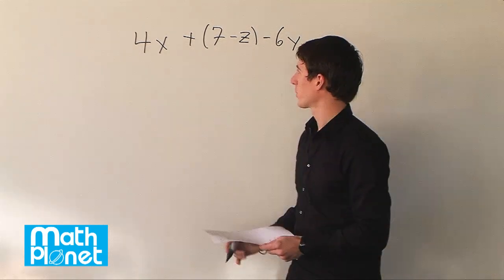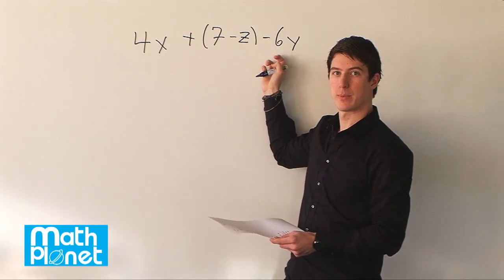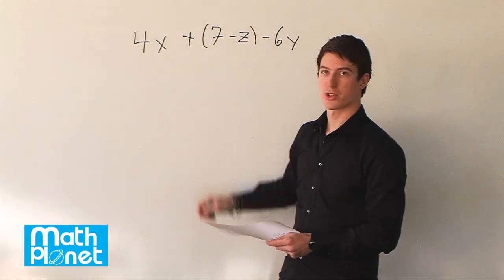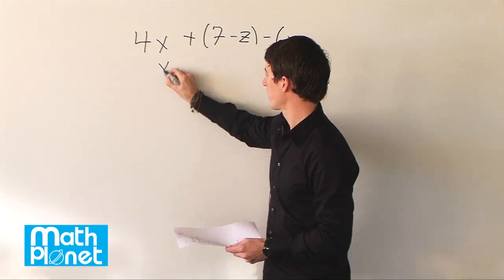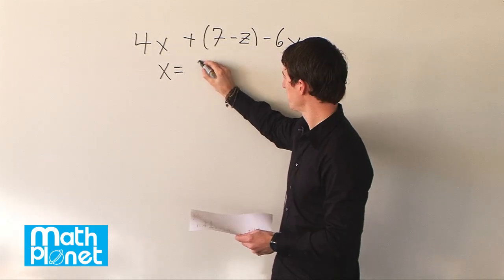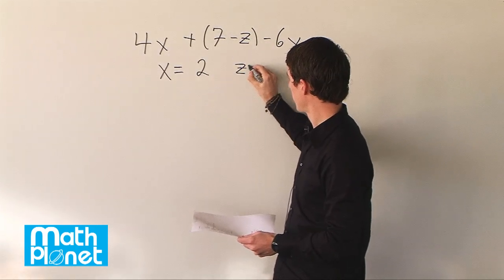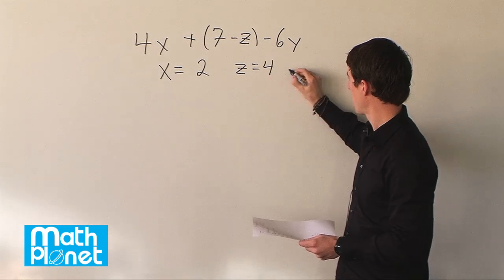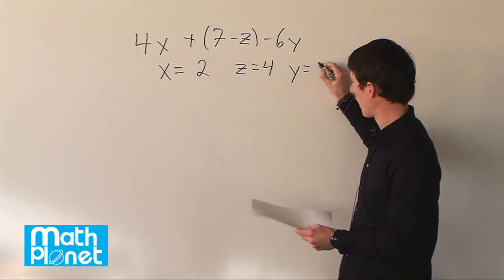Now if we're given values for x, z, and y, then we can evaluate this expression to some numerical value. We're given x is equal to 2, z is equal to 4, and y is equal to 5.